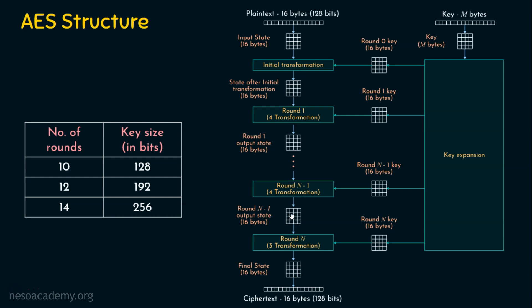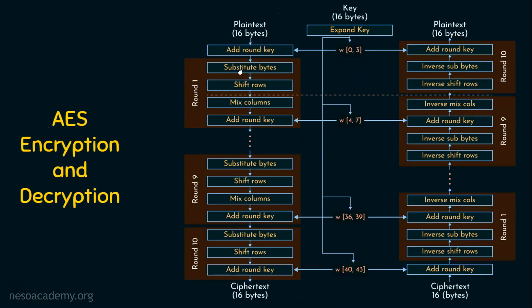The number of rounds varies as per the key size: 10, 12, or 14 rounds. All rounds except the last round will have four transformations: substitute bytes, shift rows, mix columns, and add round key. The last round contains only three transformations — sub bytes, shift rows, and add round key.